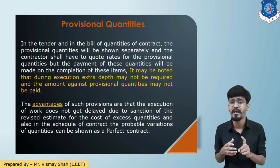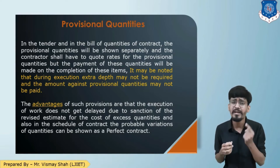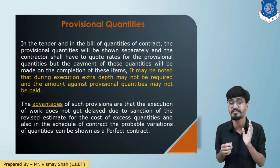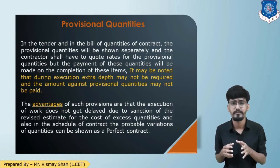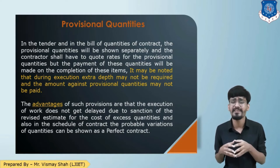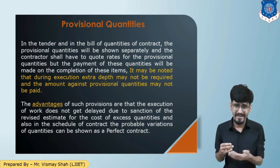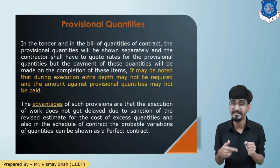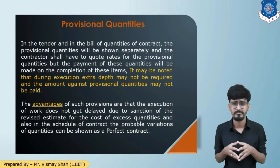The major advantage for the client in the case of provisional quantities is that by providing the provisional quantity, the client is not obligated to pay all the money to the contractor. The contractor will receive money only for the quantity he actually executes. The advantage of provisional quantity is that there will be no delay in the sanction of a revised estimate due to excess in cost. If you had not provided this provisional quantity for 5 feet and extra excavation is actually required, you need to provide a revised estimate, get it sanctioned, and then resume the work — causing chances of delay. So this is a major advantage.